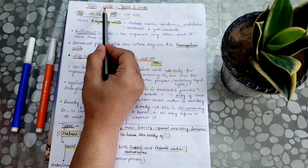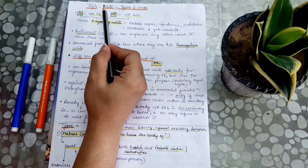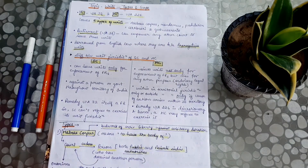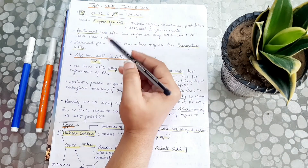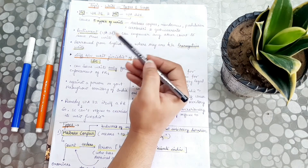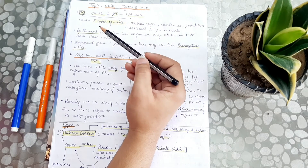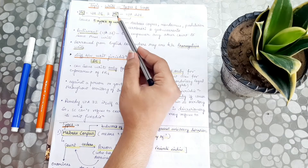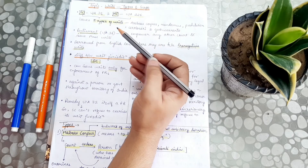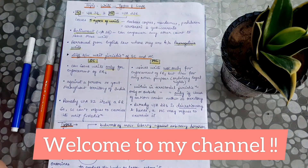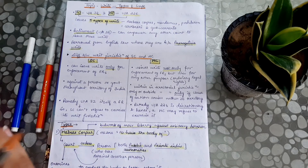Writs is a Latin word — a Latin term. The Supreme Court is under Article 32, and the High Court is under Article 226, for writ jurisdiction. Basically, when someone's fundamental rights are aggrieved, or in the case of the High Court, if there are ordinary rights aggrieved, the Supreme Court and High Court can issue these writs for the enforcement of rights.